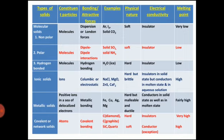Now we will see the classification of crystalline solids. On the basis of the nature of forces that bind the constituent particles together, crystalline solids are classified into four types: molecular solid, ionic crystal, covalent crystal, and metallic crystal. Molecular solids are further classified into three types: nonpolar molecular solid, polar molecular solid, and hydrogen bonded molecular solid.